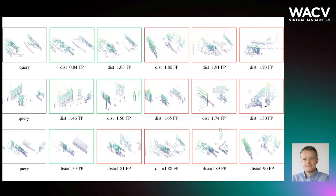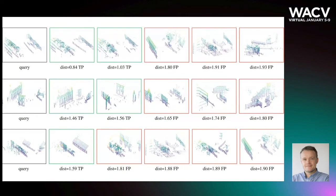MingLoc3D achieves state-of-the-art results on point cloud-based place recognition benchmarks. Results produced by a trained network are visualized on this slide. For each query point cloud on the left, its five closest nearest neighbors found using descriptors computed by the trained network are shown. Clouds in green are true positives; in red, false positives.